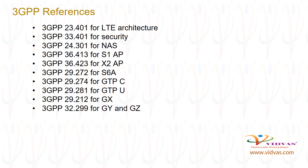The following is the list of 3GPP references: 3GPP 23.401 for LTE architecture, 3GPP 33.401 for security, 3GPP 24.301 for NAS, 3GPP 36.413 for S1AP, 3GPP 36.423 for X2AP, 3GPP 29.272 for S6A, 3GPP 29.274 for GTP-C, 3GPP 29.281 for GTP-U, 3GPP 29.212 for GX, and 3GPP 32.299 for Gy/Gz.